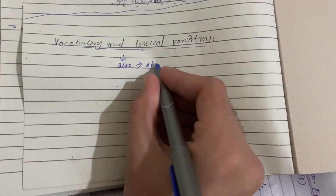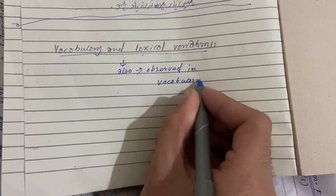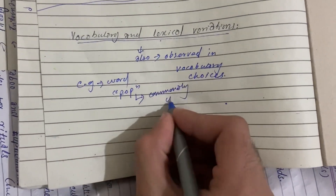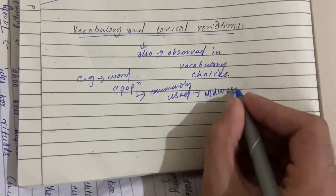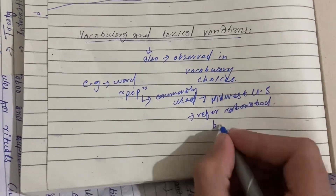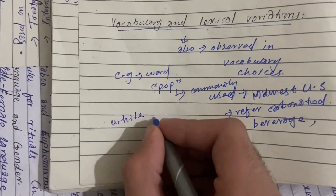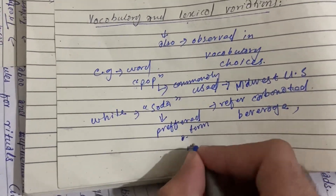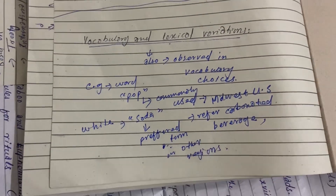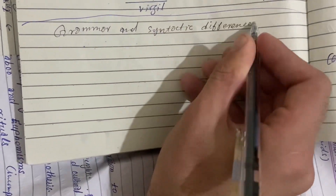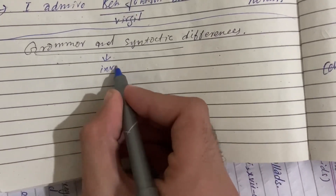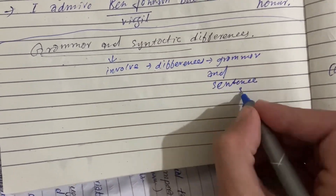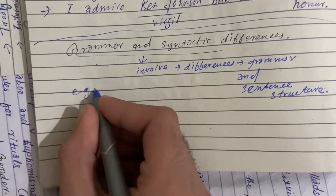Another example is vocabulary and lexical variation. Regional variations can also be observed in vocabulary choices. For example, the word 'pop' is commonly used in the Midwest United States to refer to a carbonated beverage, while 'soda' is the preferred term in other regions.